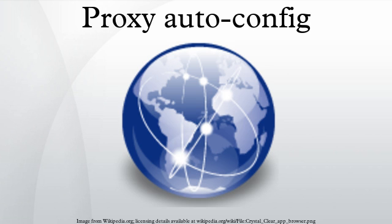Automatic proxy selection: specify a host name and a port number to be used for all URLs. Most browsers allow you to specify a list of domains that will bypass this proxy. Proxy auto-configuration: specify the URL for a PAC file with a JavaScript function that determines the appropriate proxy for each URL. This method is more suitable for laptop users who need several different proxy configurations or complex corporate setups with many different proxies.